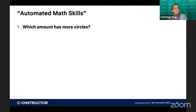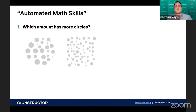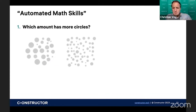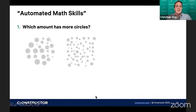I'll make a couple of examples of the automation of math skills. The first example is: if I ask you which amount has more circles, the one on the left or the one on the right? I guess most of you in this webinar will immediately know that on the right-hand side there are more circles.